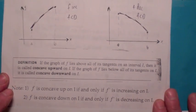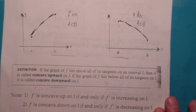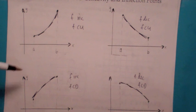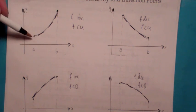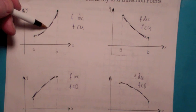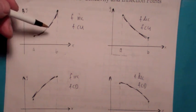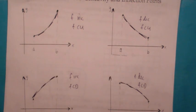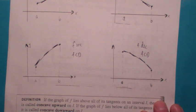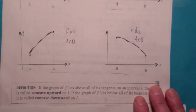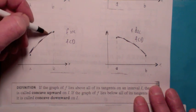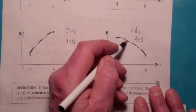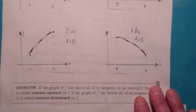A more helpful way to look at it: notice what's true about F prime when the function is concave up. As you go from left to right, the slopes of the tangent lines are increasing — so F prime is actually increasing whenever F is concave up. When F is concave down, the slopes of the tangents are going to be decreasing, becoming more negative. So F prime is decreasing whenever F is concave down.